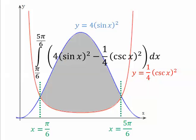And so I'm looking for rectangles where the height of the rectangle is the difference between 4 sine squared minus 1 fourth cosine squared. So I'm looking for that difference. That's the height of each rectangle and the width of each rectangle is dx. And then I'm just adding up rectangles from pi over 6 to 5 pi over 6.